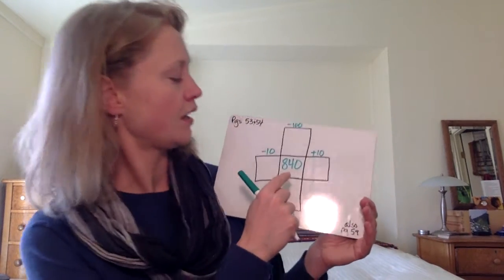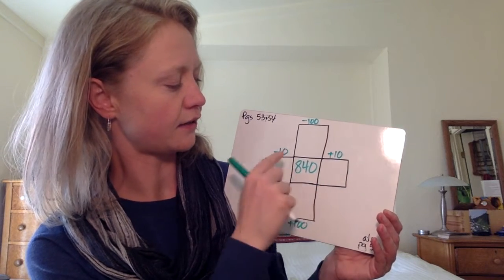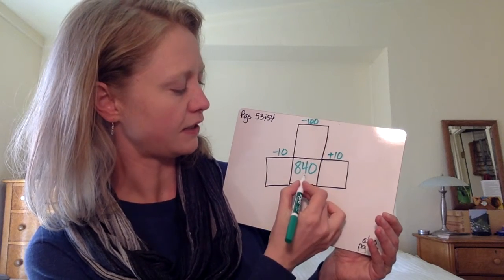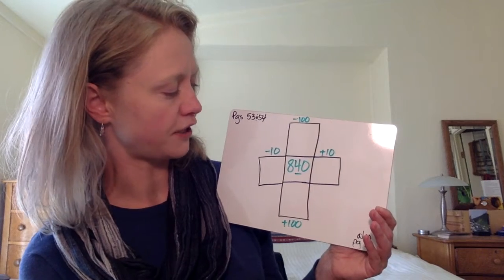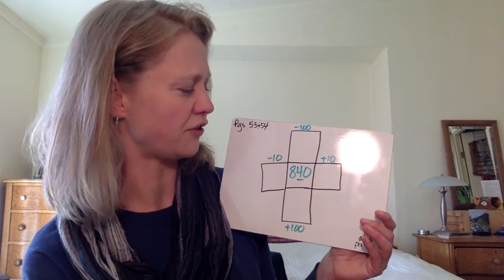But for now, if I have a number like 840, let's start with adding 10, subtracting 10. My tens place is 840. Now you might go, I have to count by tens in the eight hundreds, I don't know how to do that.